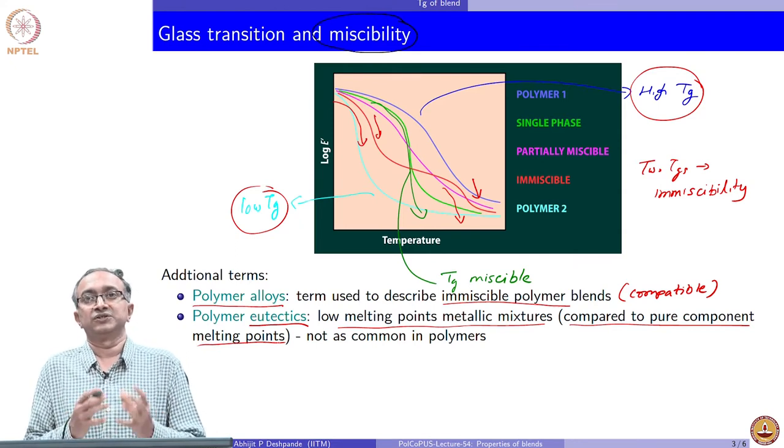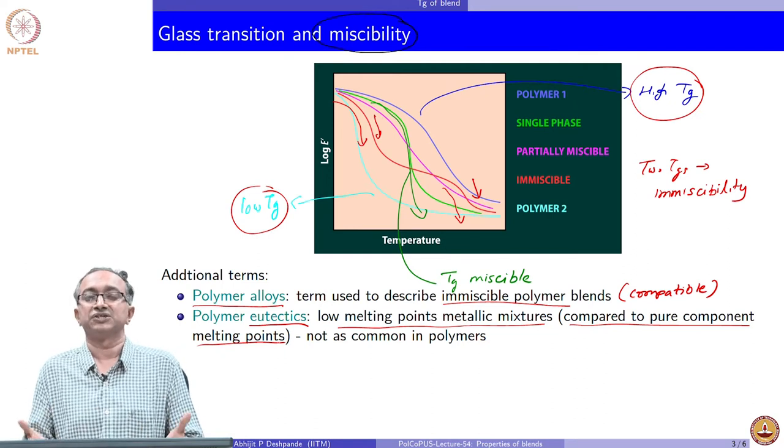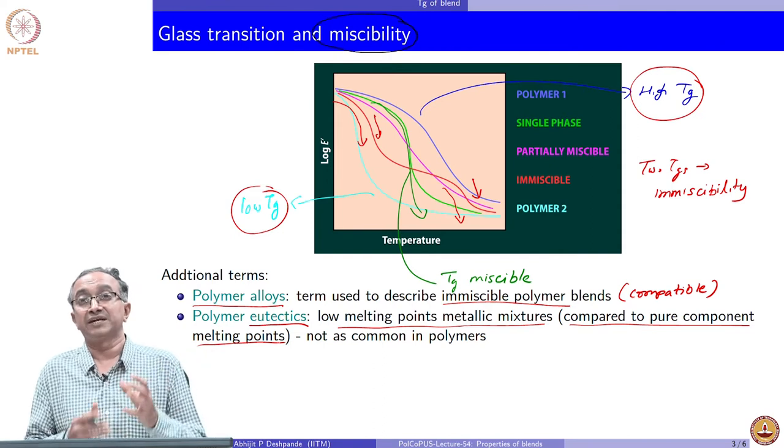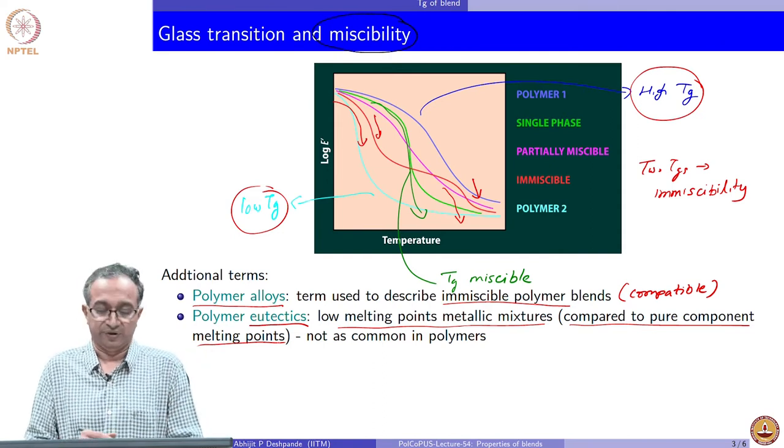Blend is in fact a term which is broad, which just implies mixture of polymers. Because there are alloys in metallic domain, sometimes compatibilized blends are also referred to as alloys.